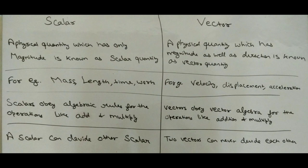Under scalar quantity, a scalar can divide another scalar. But under vector quantity, two vectors can never divide each other.